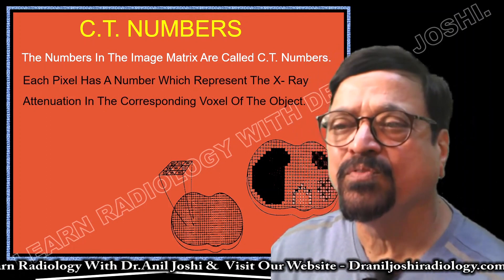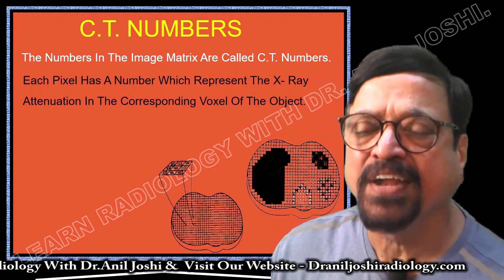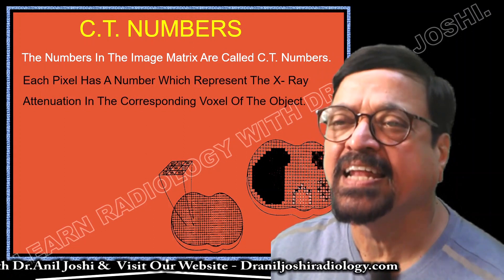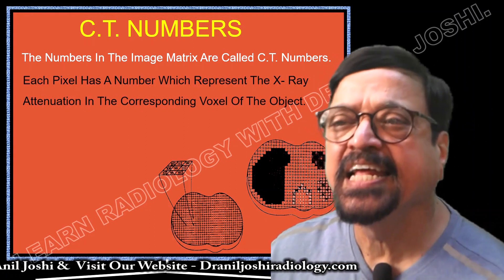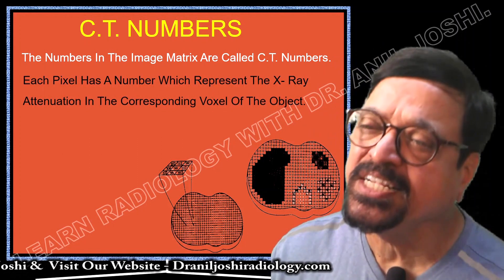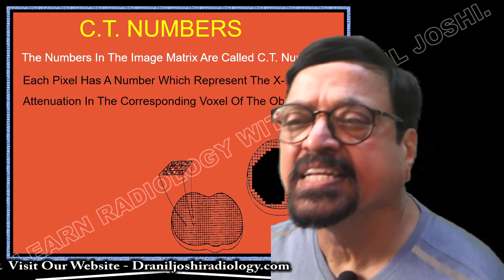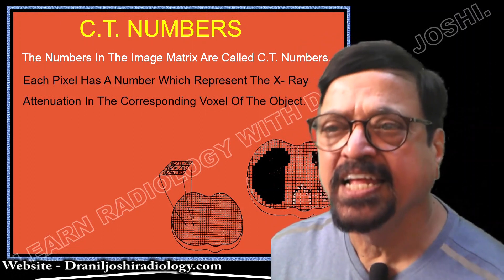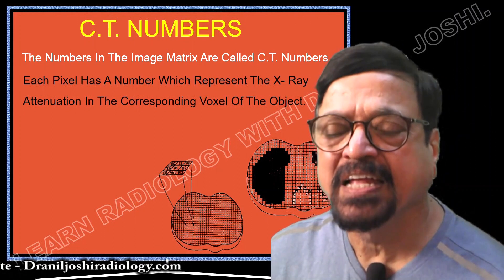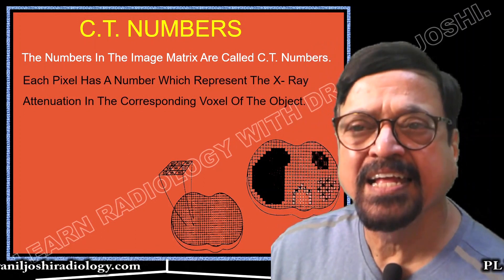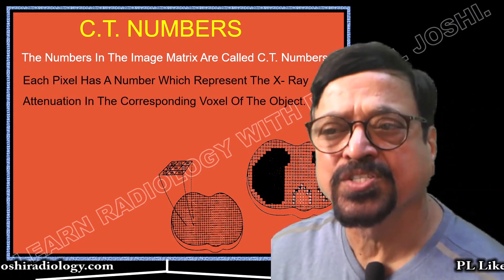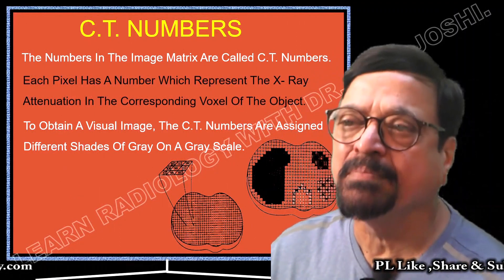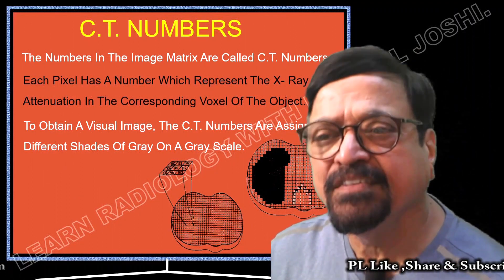The number of image matrix elements are called pixels. There are different types of matrices. The section is divided into different squares; attenuation corresponding to each section is different. The element that represents the volume in a section is called a voxel, and the two-dimensional surface of it is called a pixel. Pixel and voxel are the representations of the image. To obtain a virtual image, CT numbers are assigned different shades of grayscale.